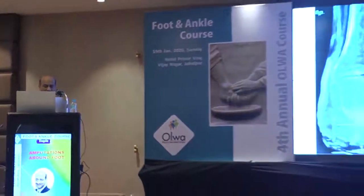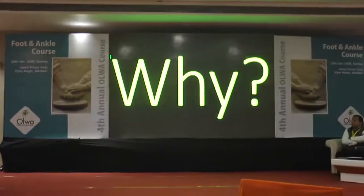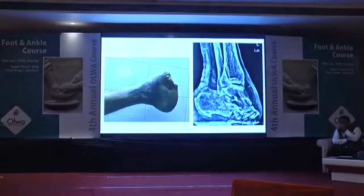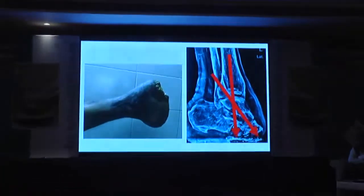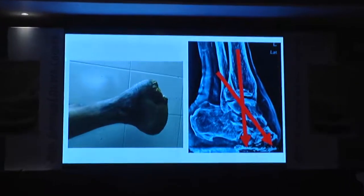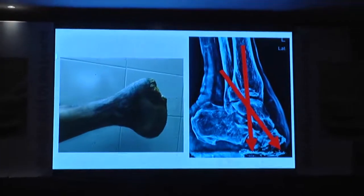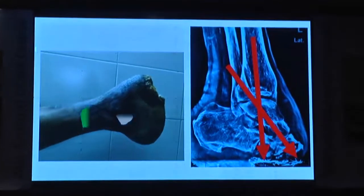Amputation with non-healing ulcer at the top of the stump for two years. This is how it looked and this is what the X-ray looked like. If you have a closer look, this is how the excess of the talus into the ankle mortise looks like.